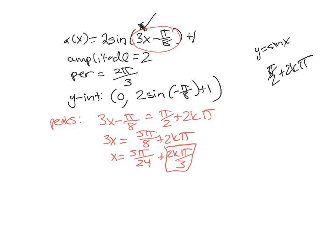And let's then do our troughs or our low point. So originally the troughs were every 3 pi over 2 plus 2k pi. So let's see where they are now. 3 pi over 2 plus 2k pi. All right. Adding pi over 8 and dividing by 3, let's just do this in one step here. We're going to get 13 pi over 24 plus 2k pi over 3.